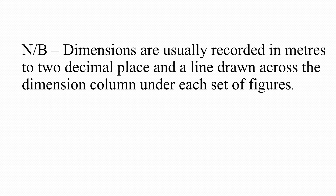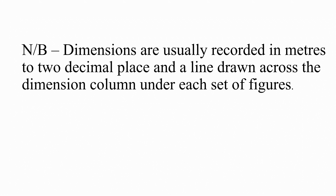Dimensions are usually recorded in meters to two decimal places, with a line drawn across the dimension column under each set of figures. In the dimension column you write figures in meters, but in the description column waste calculations are done in millimeters. For example, if you have two rectangles — one measuring four by three meters and another measuring five by three meters — you write them separately in the dimension column, each to two decimal places, then draw a line under each set.